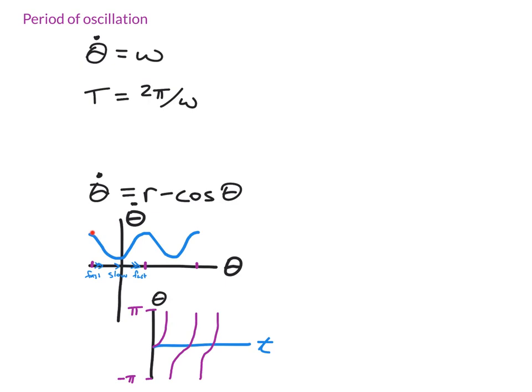So here we are at some value of r where oscillation is turned on and theta is always increasing. I could sort of draw what that looks like versus time. I'm slow at some values of theta and faster at others. I move slowly when theta is near zero and fast when theta is near pi. Over and over again, theta is going to be following those curves.